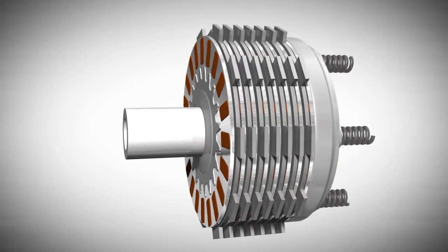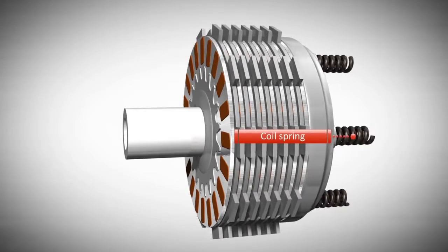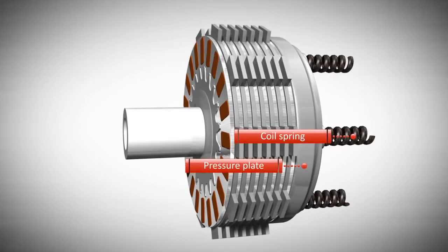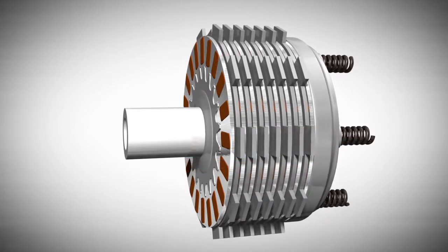Usually the disks are engaged by pressure through a set of four coil springs. These apply pressure on a pressure plate that consequently applies pressure to the clutch pack.